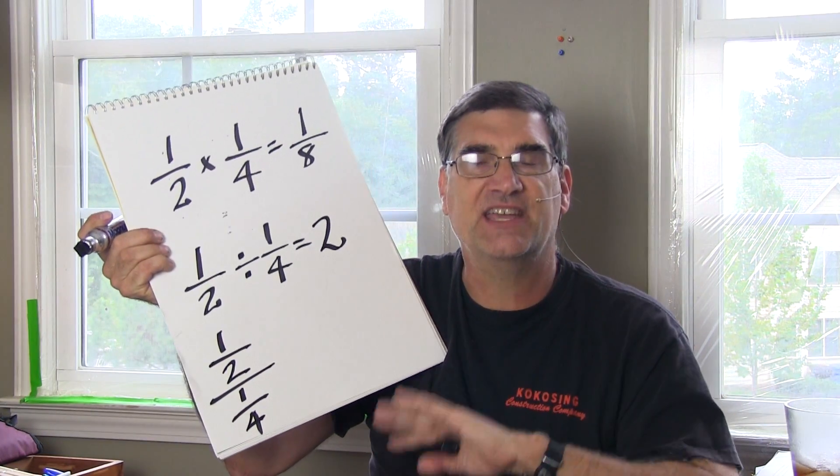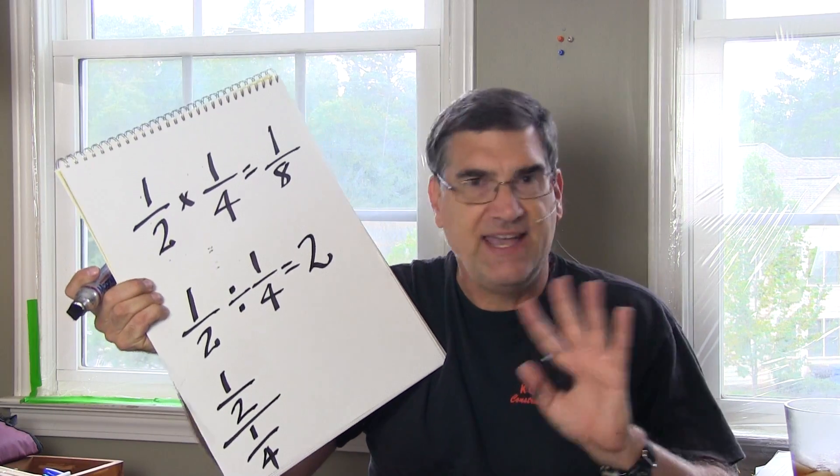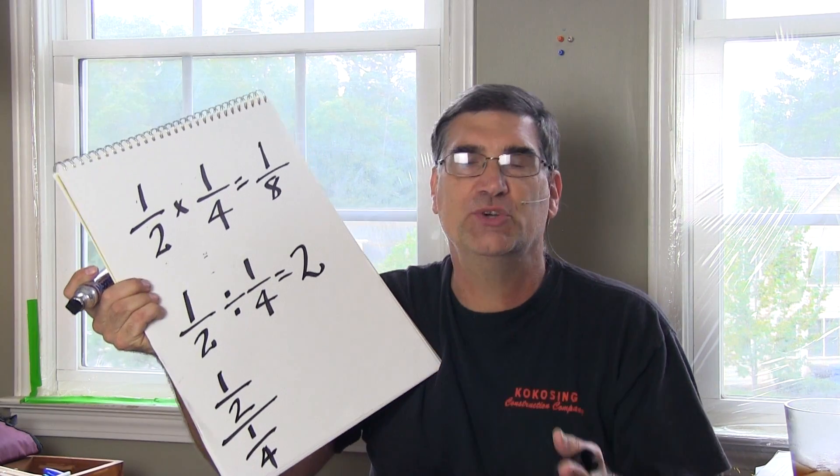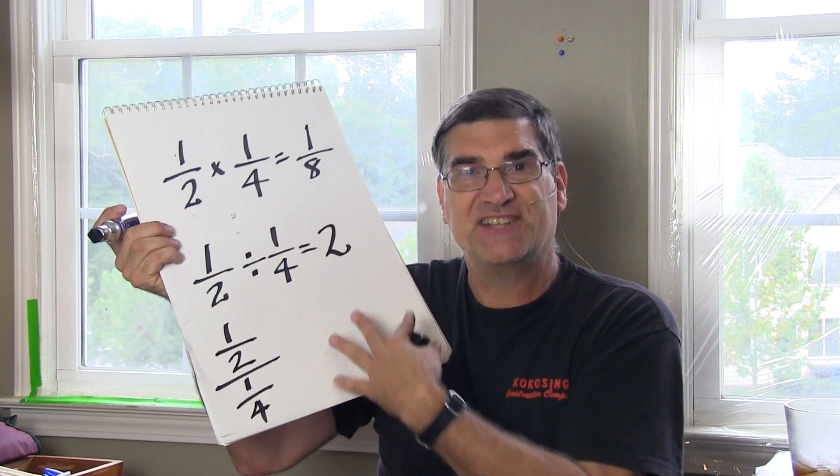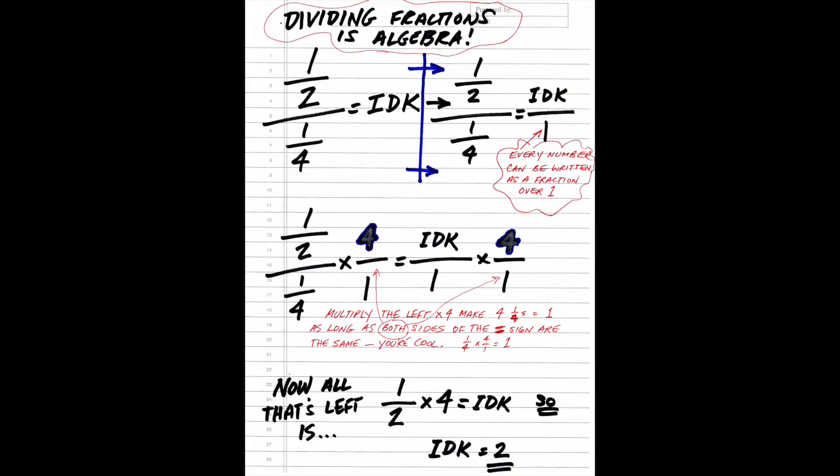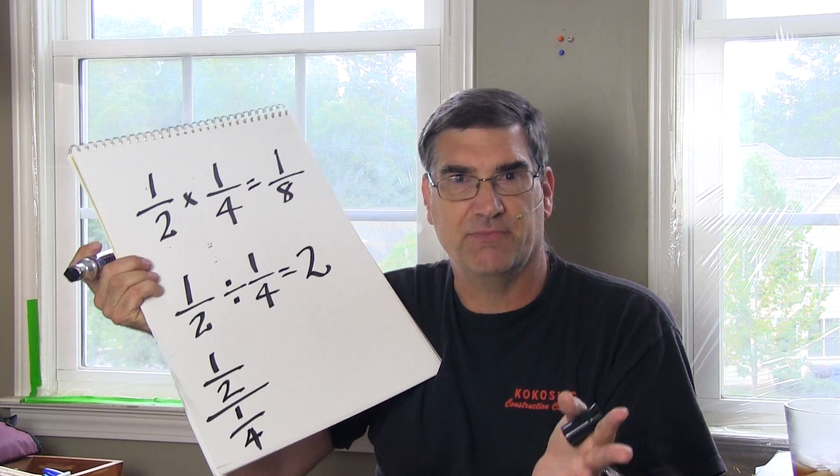And here's what they're going to tell you to do. They're going to say invert and multiply. Well, yes, but they don't tell you why. Well, the reason they're doing this is because it's an algebraic function. So when your kids invert and multiply, they're actually doing algebra. But nobody tells them that.